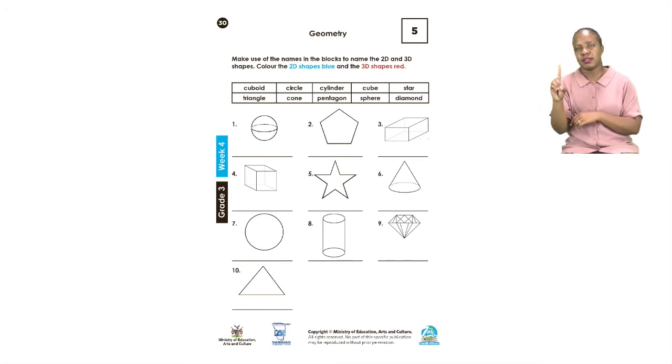So we first need to know our 2D shapes. It says, make use of the names in the blocks to name the 2D and 3D shapes. Color the 2D shapes blue and the 3D shapes red. So first you are going to name each one. We are going to start with number 1. Number 1 is a sphere. The word sphere is in the bottom there. And you can see that it is S-P-H-E-R-E. Sphere. So please write the name of that shape.